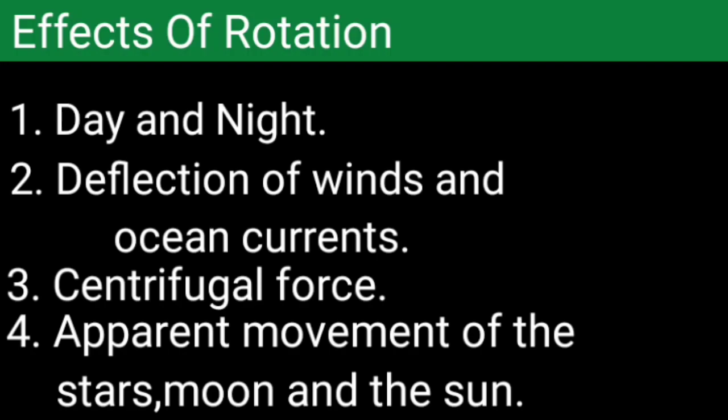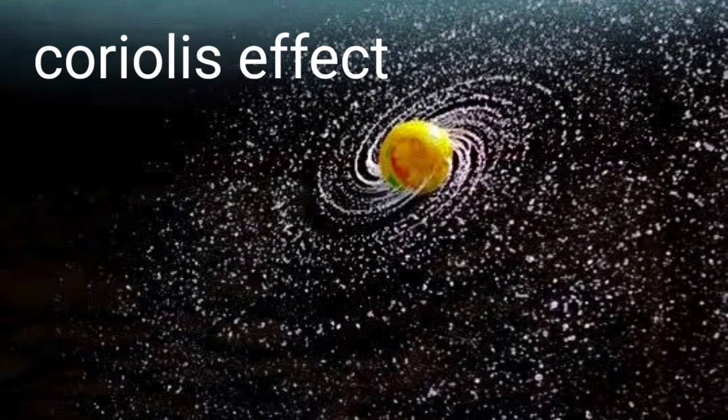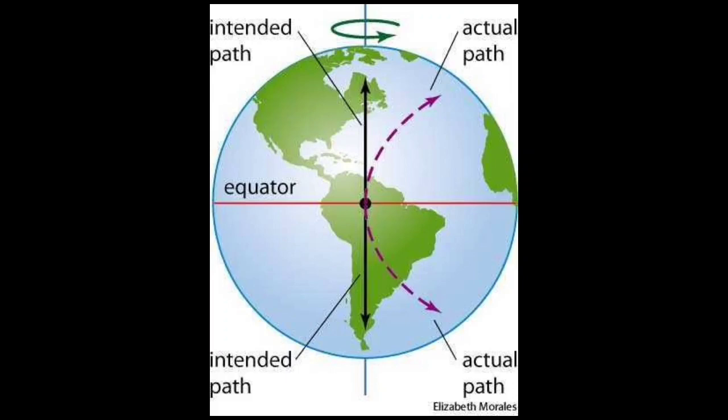The next effect of rotation is the deflection of winds and ocean currents, which is caused by the Coriolis effect. The Coriolis effect is produced by the Coriolis force, which is generated by the earth's rotation. It has an effect on every moving body, whether it is a bullet fired from a gun, wind, or ocean currents. As you can see in the diagram, wind is deflected towards the right in the northern hemisphere and towards the left in the southern hemisphere.